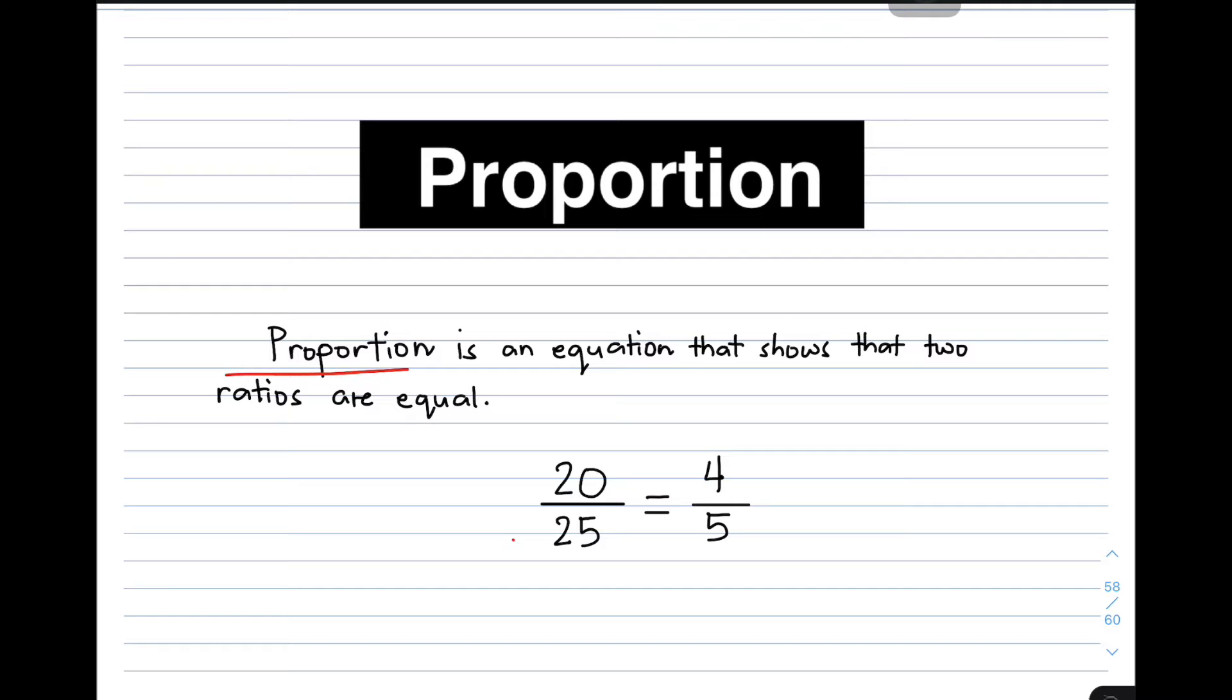Given our definition of proportion, we have here proportion is an equation that shows that two ratios are equal. So in our screen, we have here the first ratio, 20 over 25, and we have the second ratio, which is 4 over 5. This one is an example of proportion. But let's prove that this one is a proportion. We know that we can simplify this ratio by dividing your numerator by 5 and also by dividing your denominator by 5, and it will become 4 over 5, meaning 20 over 25 is equal to 4 over 5. It shows that these two ratios are equal and definitely an example of proportion.